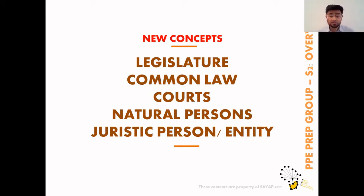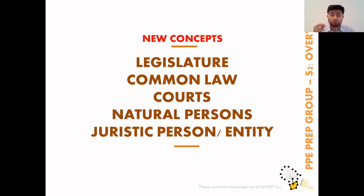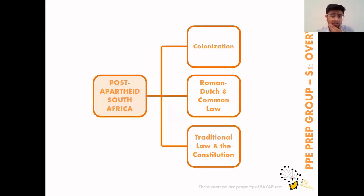We're then going to talk about courts — which, according to region, enforce acts and policies in specific areas. We also talk about the idea of natural persons and juristic persons. A natural person is you — a human being born from another person. A juristic person or juristic entity is one that has been created because of legislation. These are concepts we need to research further.